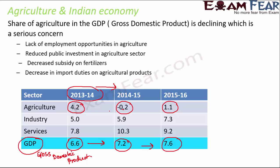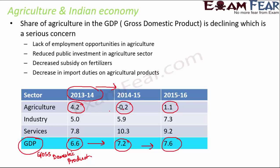The share of agriculture in GDP is declining, which is a serious concern. Some of the adverse effects include lack of employment opportunities in agriculture, leading to disguised unemployment in the agriculture sector. There is also reduced public investment in agriculture, since no one is willing to invest when agriculture is not contributing to GDP.